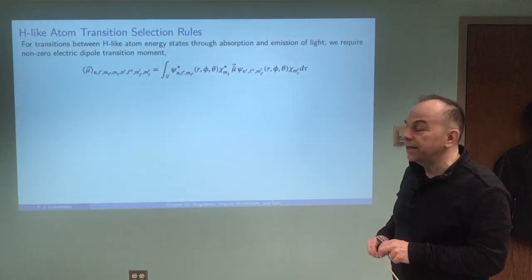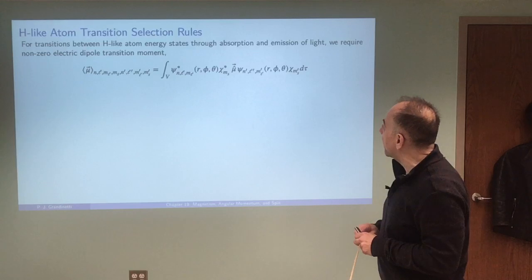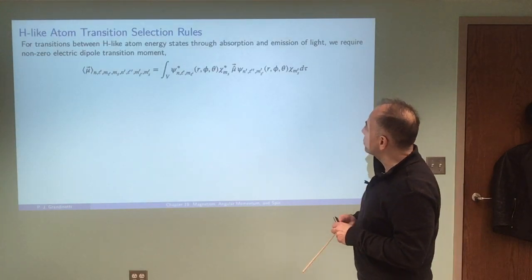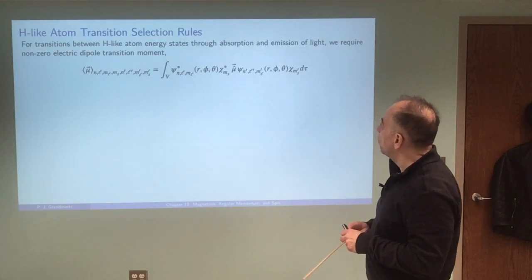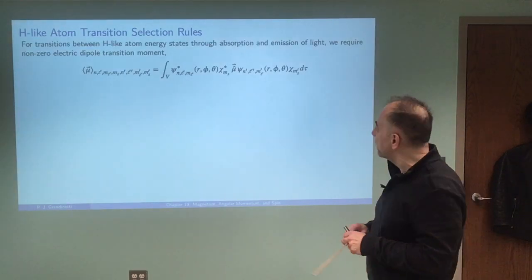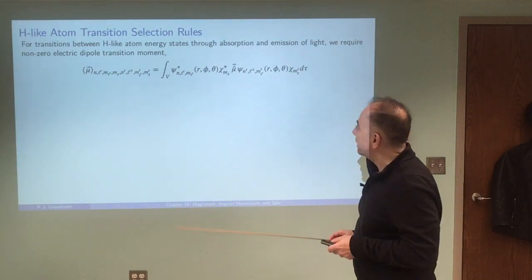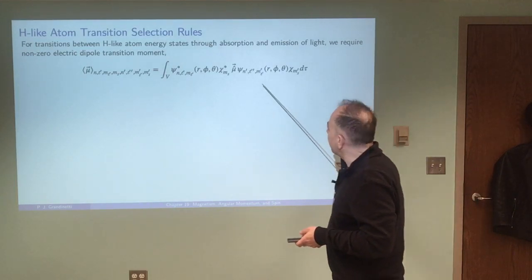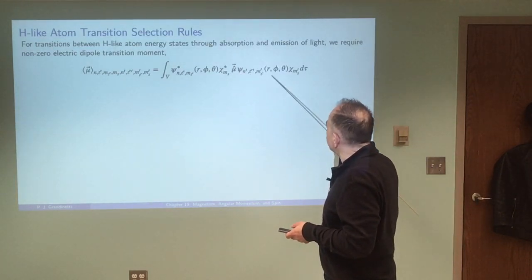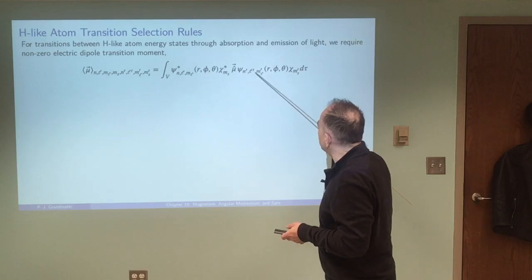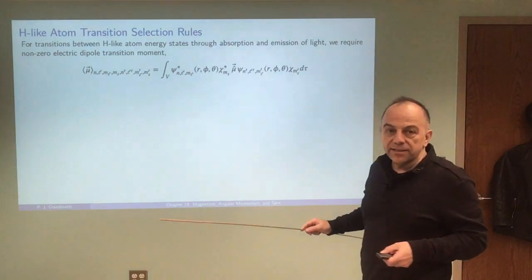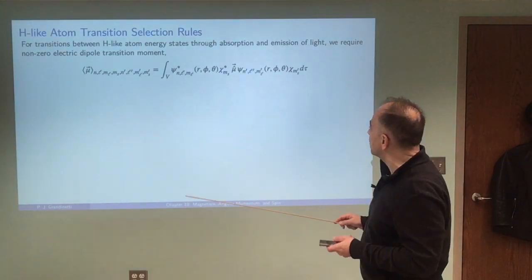If you recall from the earlier chapter on radiating dipoles and quantum mechanics, we saw that transitions will occur between levels if this transition moment integral is non-zero. So here we have the electric dipole moment sandwiched between the wave functions of the two energy eigenstates that we're trying to connect with our transition.